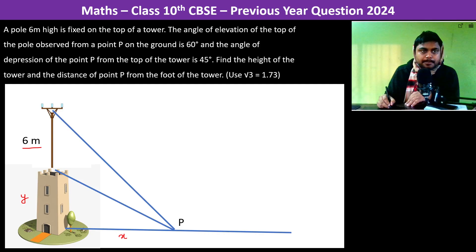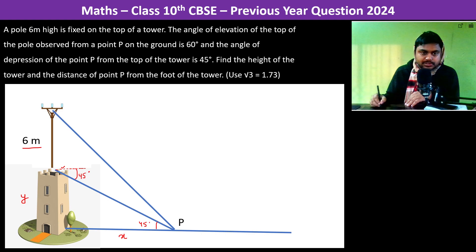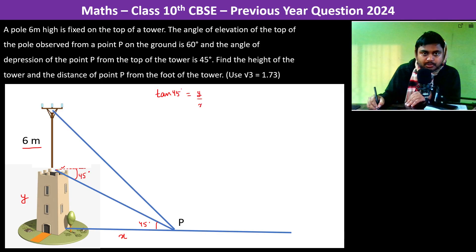From the tower the angle of depression is 45 degrees. This is the angle of depression which is 45 degrees, and therefore this angle is also going to be 45 degrees. So we can write tan 45° = y/x, and since tan 45° = 1, therefore y = x. That is the first equation.